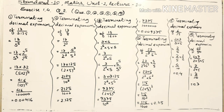For question 8, to get the terminating decimal expansion of 6 upon 15, I factorize numerator and denominator and cancel the common factor 3, leaving 2 upon 5. In the denominator there is only 5 with power 1, so I need 2 with power 1 as well. I multiply 2 in both numerator and denominator: numerator becomes 4, denominator becomes 5 into 2 equals 10. After 1 decimal digit, the answer is 0.4.